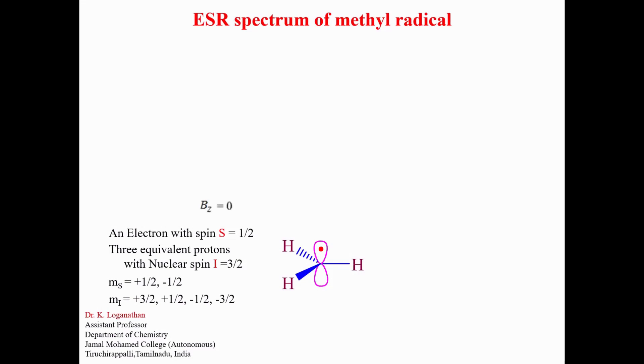In the absence of magnetic field, the electron spin energy levels MS equals plus one-half and minus one-half are degenerate. They have the same energy.